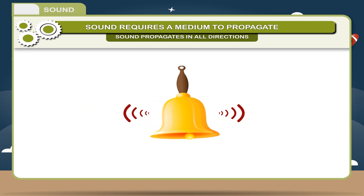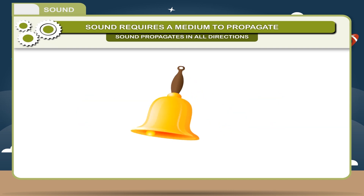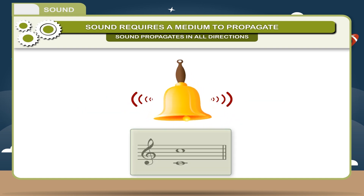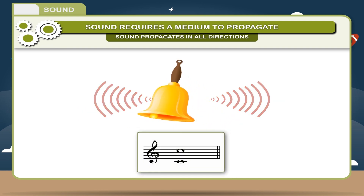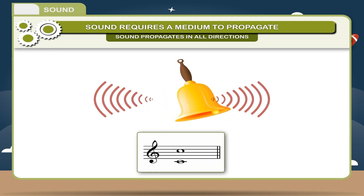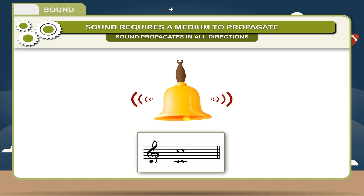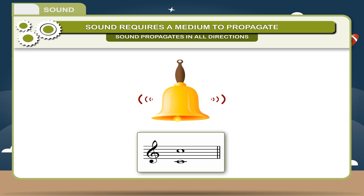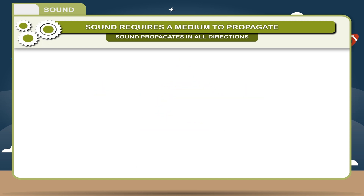In music, there is a scale of pitch-related notes called an octave. The sounds produced by these notes are different as their frequencies are different.